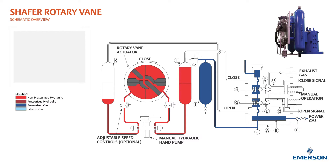Power gas connected to the poppet block flows past the power storage tank check valve, through the power gas strainer, and fills the optional power storage tank. Power gas also flows into the backside of the poppet block, forcing the power poppets onto their seats.